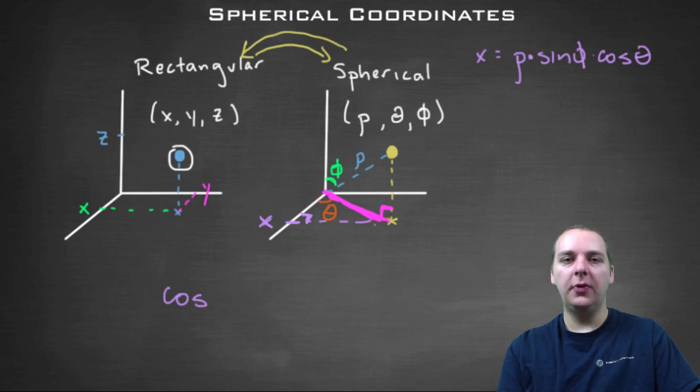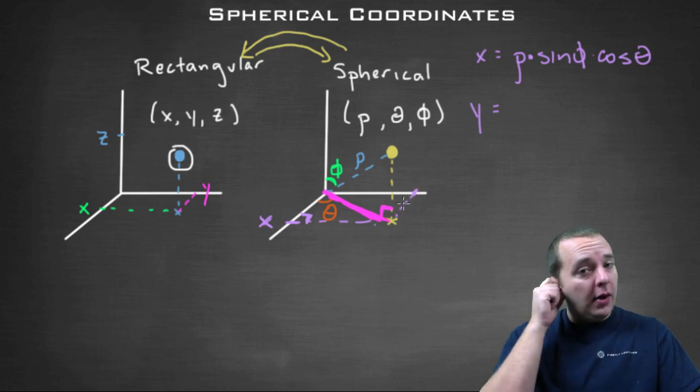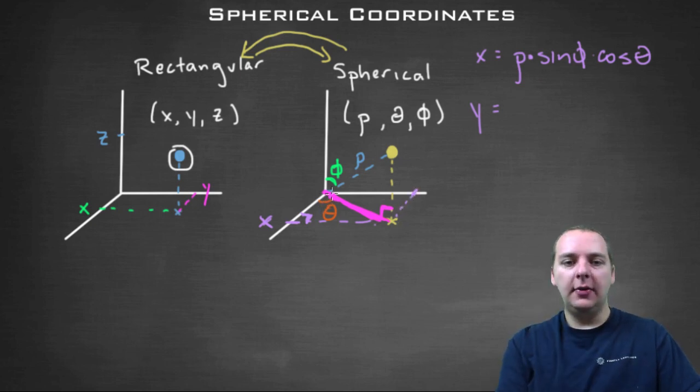Alright, how do you get the y? How do you get the y coordinate? So here's y back here. Notice if this is theta right here, then again, alternate interior angles agree with one another. So this right in here would also be theta on the opposite side of the pink line segment.